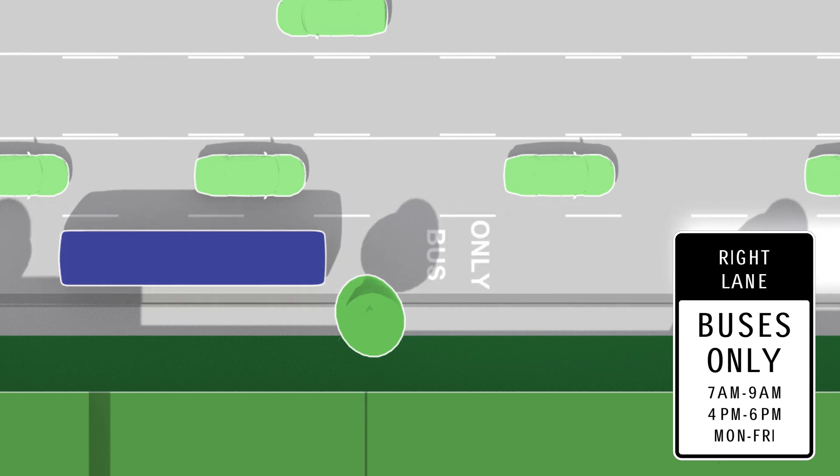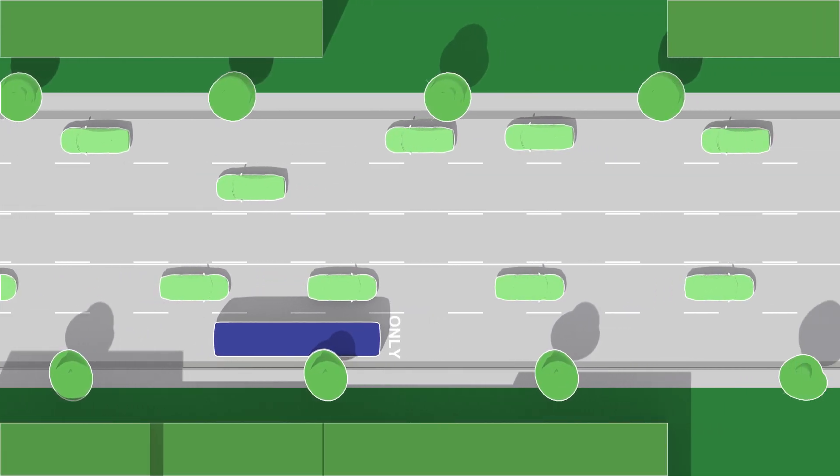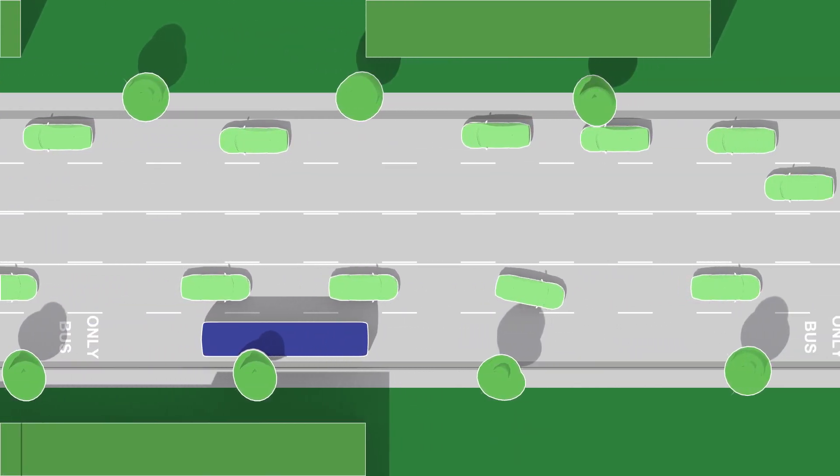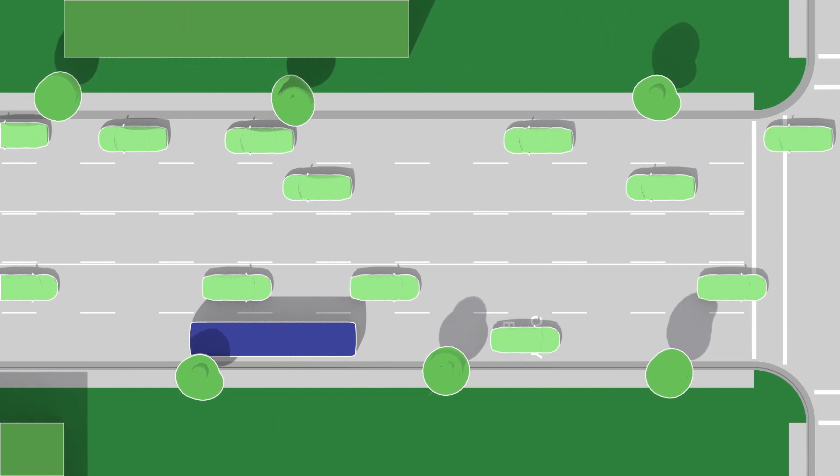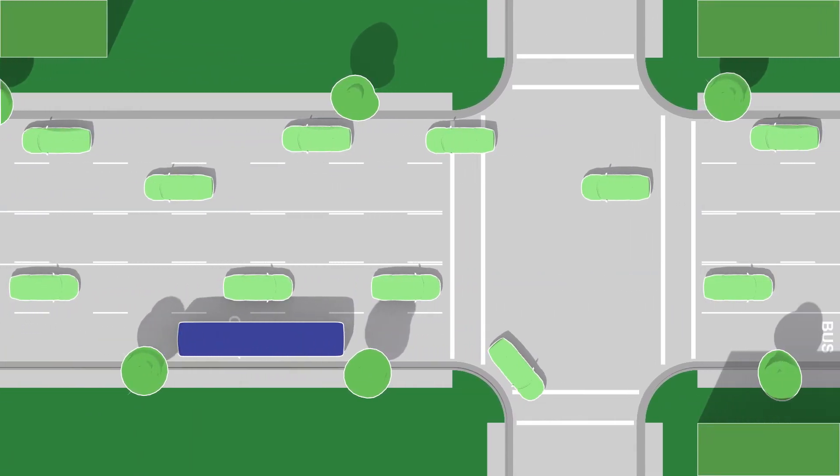These bus-only lanes have dashed white lines and bus-only street signs and markings. During peak hours, the right lane will be reserved for buses and right-turning vehicles only. This lane will allow buses to move more quickly through the corridor.